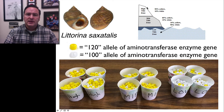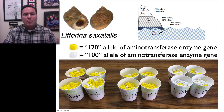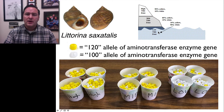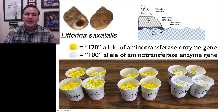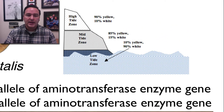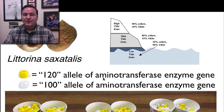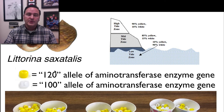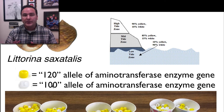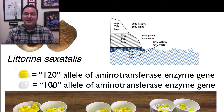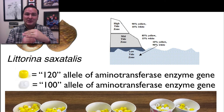The snails can live from a high tide to mid-tide to low tide zone. Scientists have observed that there is a different proportion of alleles at high tide versus mid-tide versus low tide. The allele we're going to concentrate on is the aminotransferase enzyme gene, and there are two different alleles for this gene: a 120 allele and a 100 allele.